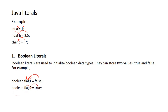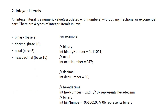Integer literals are numeric values associated with a number without any fractional or exponential part. There are four types of integer literals in Java: binary, decimal, octal, and hexadecimal.